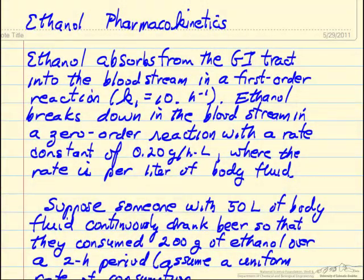This is a process of modeling how ethanol behaves in the human body. When consumed, it goes into the GI tract and is absorbed into the bloodstream in a first order reaction where the rate constant is 10 hours to the minus 1. In the bloodstream it breaks down to byproducts in a zero order reaction with the rate constant indicated here, and this rate is per liter of body fluid.